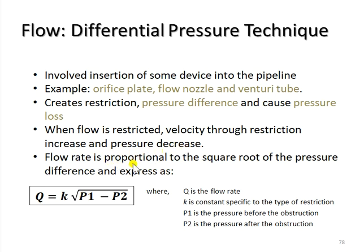The flow rate is proportional to the square root of the pressure difference and can be expressed as the following equation. The flow rate, Q, is given by the square root of P1 minus P2, and multiplied with a constant of the restriction, k. P1 and P2 are the pressure before and after the obstruction, respectively.